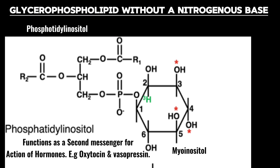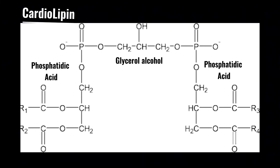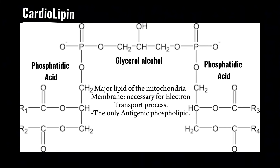The second type of glycerophospholipid without a nitrogenous base is cardiolipin. In this structure, two phosphatidic acids are linked together by a glycerol alcohol. Cardiolipins are the major lipid of the mitochondrial membrane — the powerhouse of the cell — where they are necessary for the electron transport process. Cardiolipin is also the only phospholipid that is antigenic.